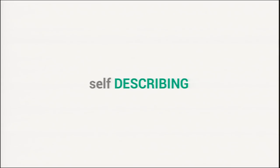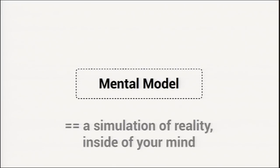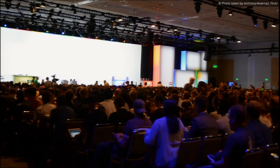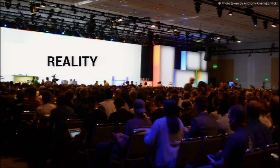Starting out with self-describing — the first thing I want to talk about is the notion of a mental model. A mental model is basically a simulation of reality inside your mind. To pose a question: how many instances of this talk are happening right now? The answer is one — it's right there. The photons are bouncing off the screen at you. When you're in a big room, you've got the talk there. That's reality. But on another side, everyone is interpreting the talk in a simulation of the room inside their own head.